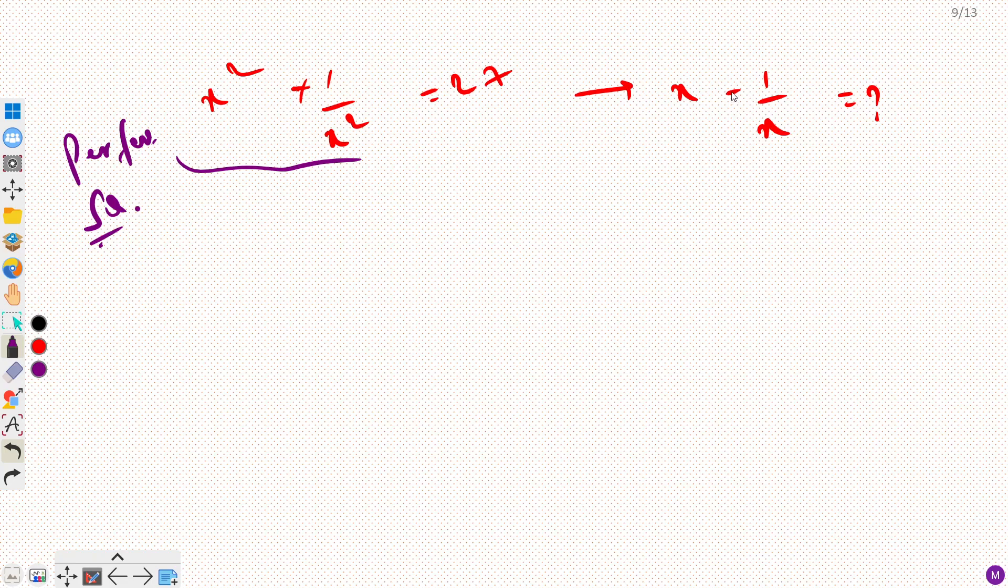And one more thing here, we have minus sign, so we will have to introduce a minus sign. So let's say x is a and 1 by x is my b. So we already have a square, we already have b square, right? This is 1 by x.